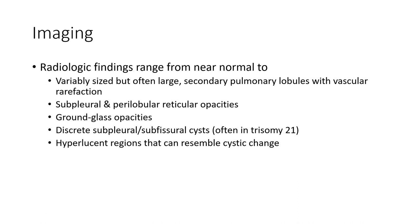Radiograph findings range from near normal to variable in size but often show large, hyperlucent pulmonary lobes with vascular and other associated changes.